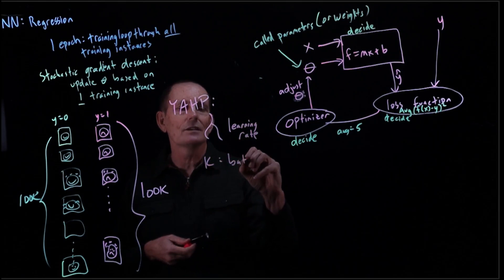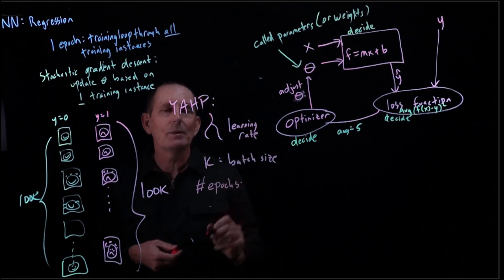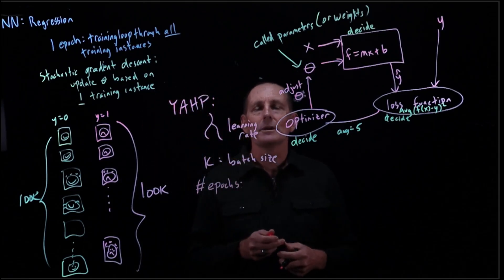We have k, which is the batch size. We have also the number of epochs. How many epochs are you going to run? That is a hyperparameter.